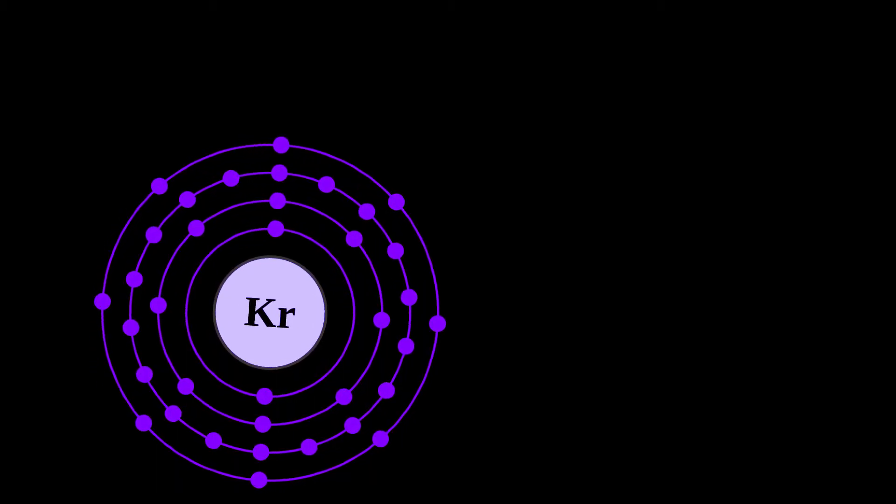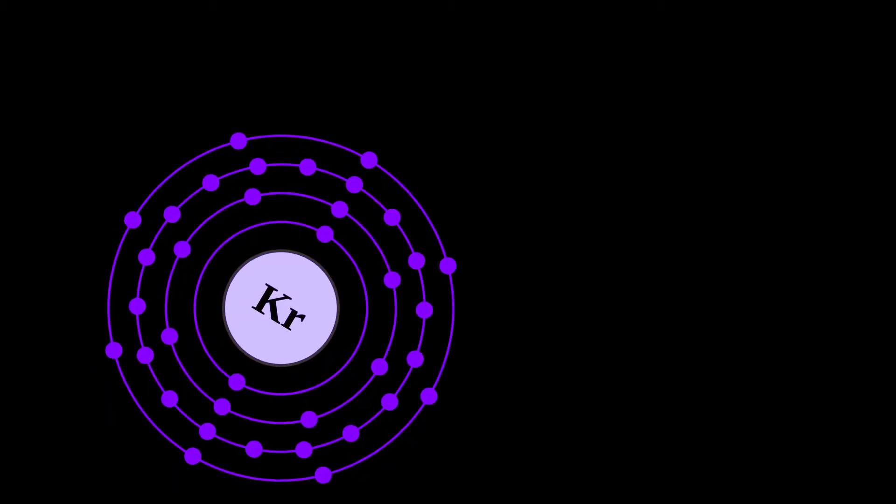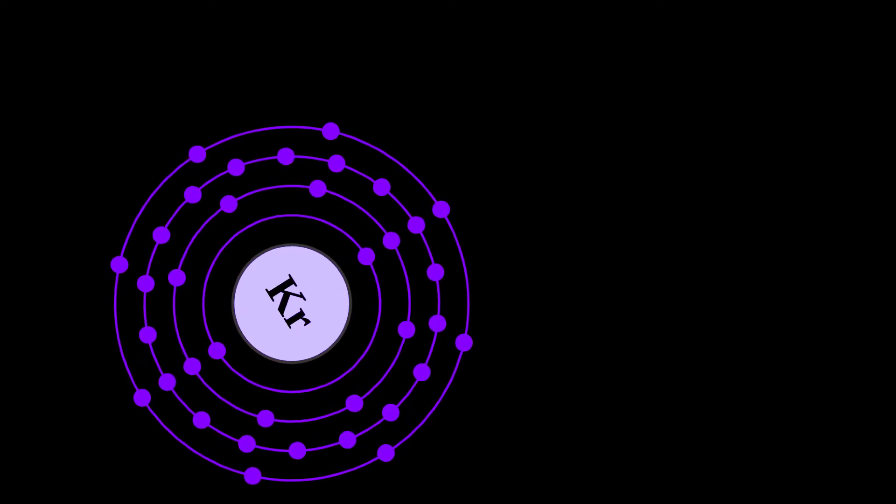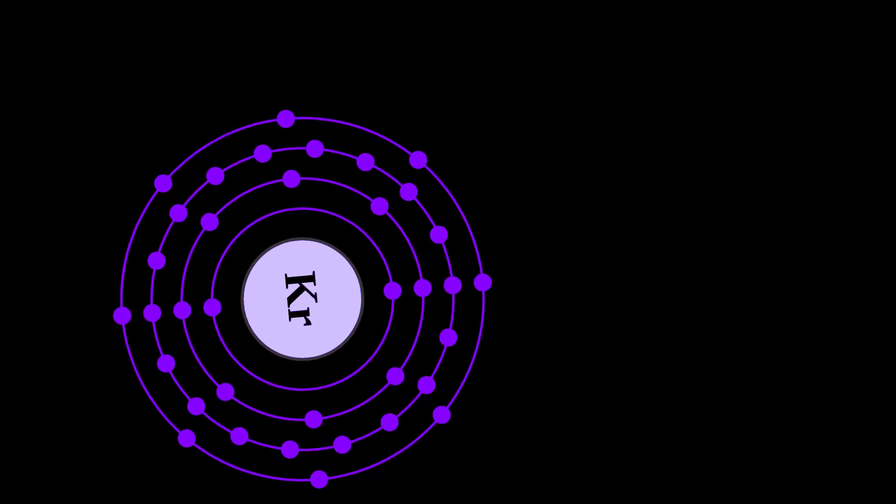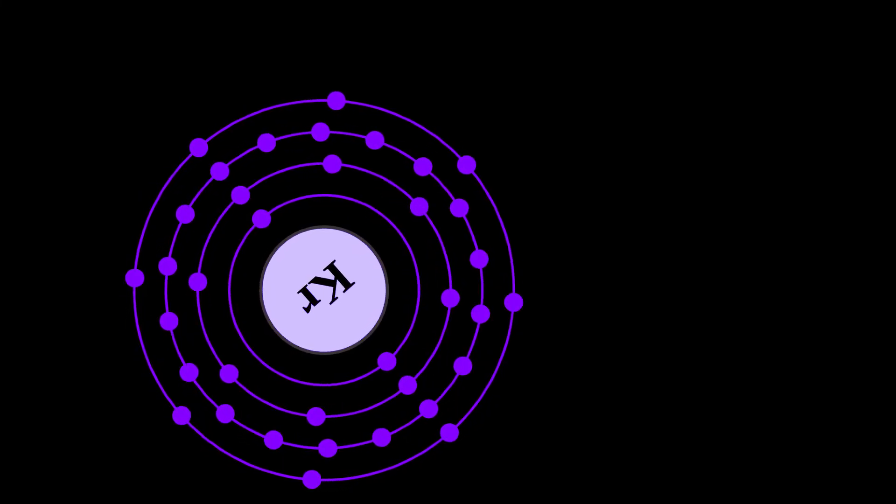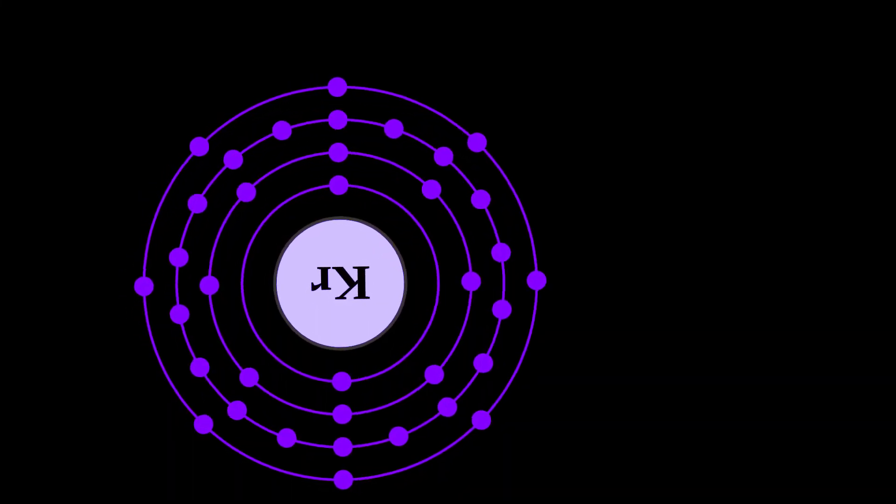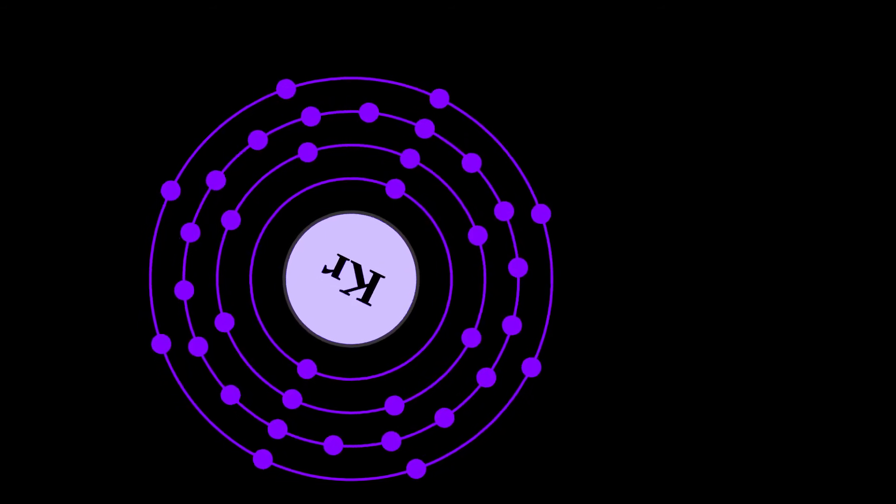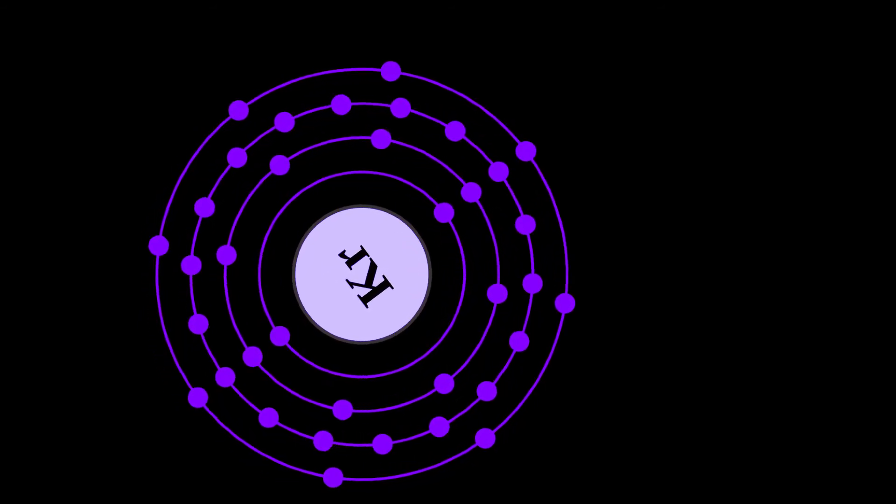Krypton was discovered in Britain in 1898 by Sir William Ramsey, a Scottish chemist, and Morris Travers, an English chemist, in residue left from evaporating nearly all components of liquid air. Neon was discovered by a similar procedure by the same workers just a few weeks later.